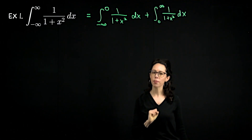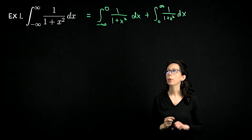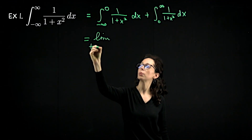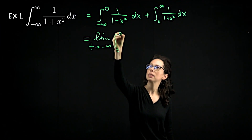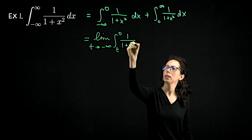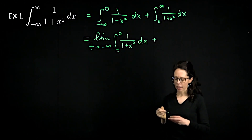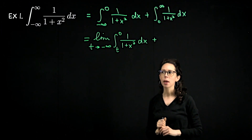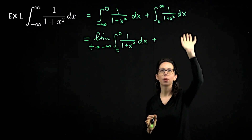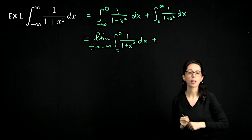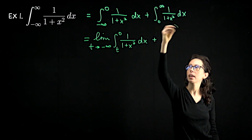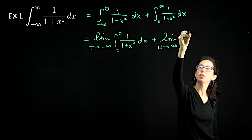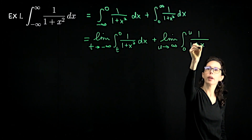Each of these is the type of improper integral we did in part one. So we rewrite the first expression as the limit as t goes to negative infinity of the definite integral from t to zero of 1 over 1 plus x squared dx. For the second one, I'm going to change my letter from t to u to avoid any risk of canceling something from the right with something from the left. So the second improper integral is the limit as u goes to infinity of the integral from zero to u of 1 over 1 plus x squared dx.